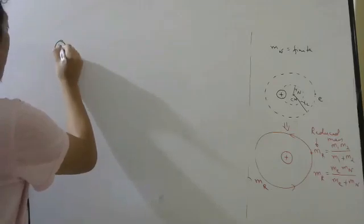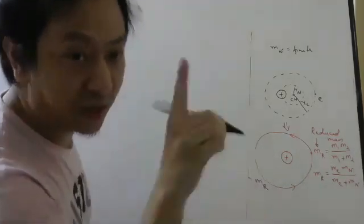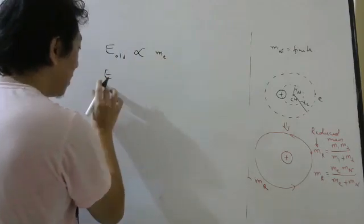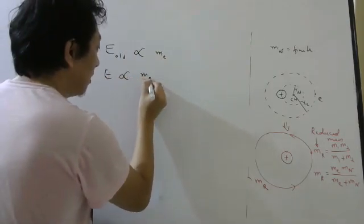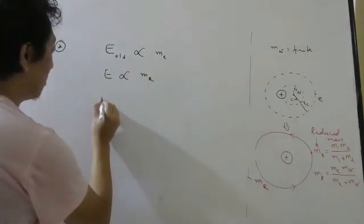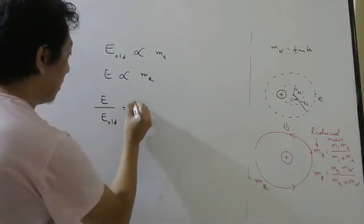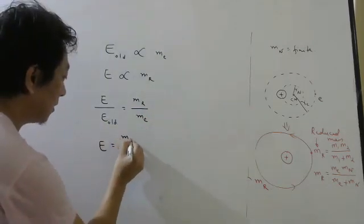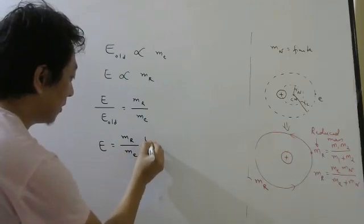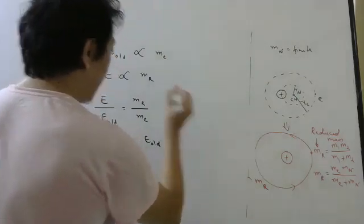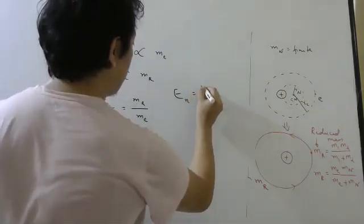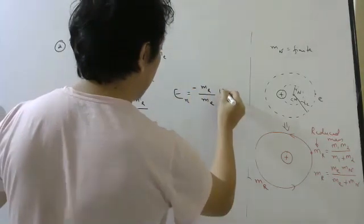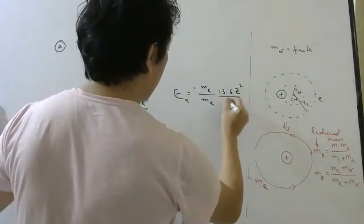Number 2. How energy will be affected? Now, first you tell me. Energy has mass in the numerator. So energy old has mass in the numerator. So the new energy will be proportional to reduced mass. So you have to replace this mass by this mass. So energy by energy old will be equal to mass reduced by mass of electron times E old. And E old, Nth orbit if I want or Nth state. It will be reduced mass by mass of electron and this energy we know already. Minus 13.6 Z square by N square eV.